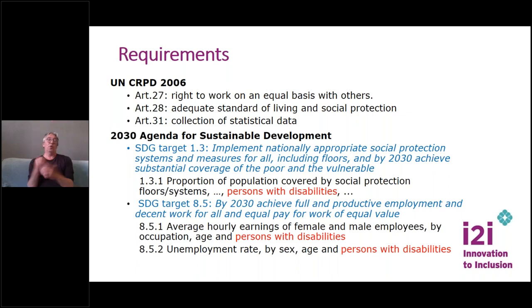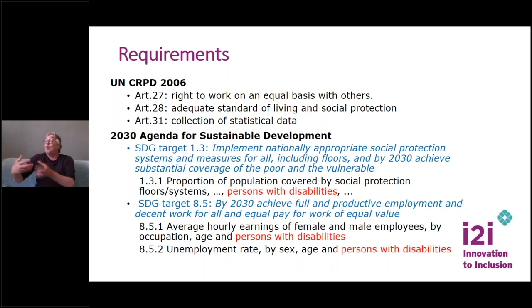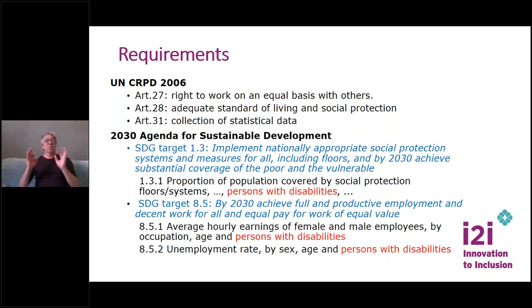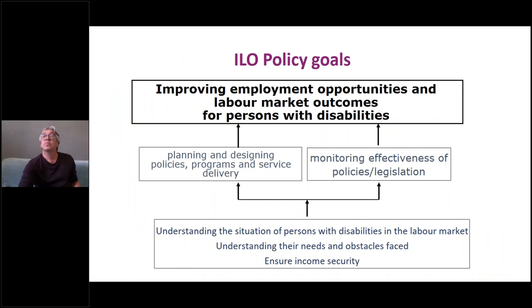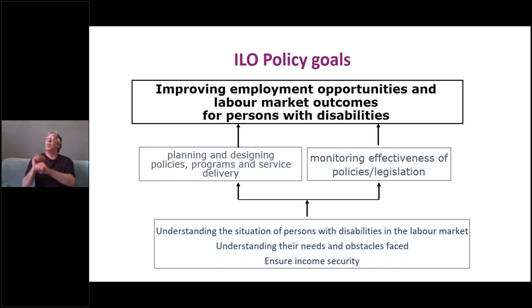The 2030 Agenda for Sustainable Development recognizes persons with disabilities as one of the vulnerable groups and calls for their empowerment. There are two targets on labour-related indicators for persons with disabilities. Under SDG Goal 1, Target 1.3, the indicator chosen to monitor progress is the proportion of population covered by social protection systems for persons with disabilities. Under Goal 8, SDG Target 8.5, by 2030: achieve full and productive employment and decent work for all. Two indicators are used: first, average hourly earnings, and second, unemployment rate by disability status.